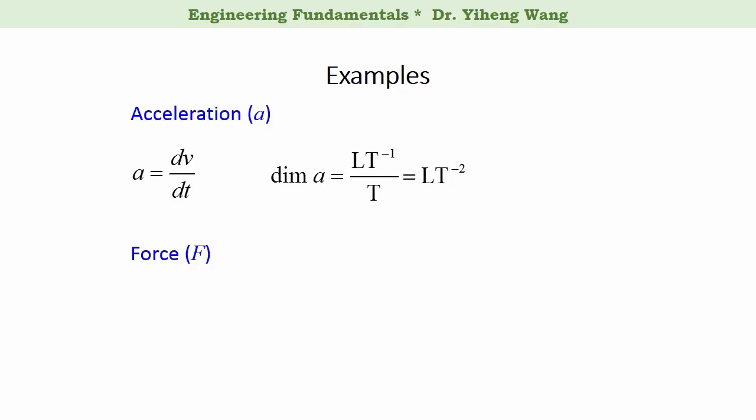For the physical quantity force, which is defined through Newton's second law to be mass M multiplied by acceleration a, the dimension for force is M — the dimension for mass — multiplied by L times T to the negative second power, which is the dimension for acceleration. Therefore, after combining these together, the dimension for force is L M T to the negative second power.